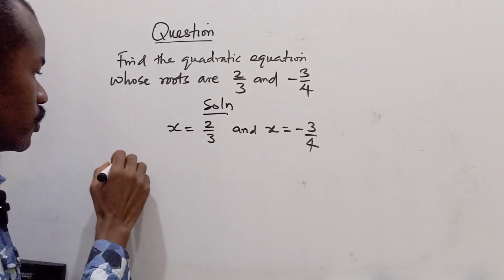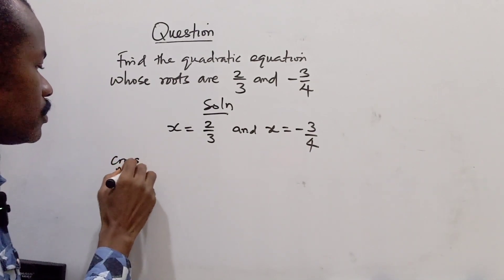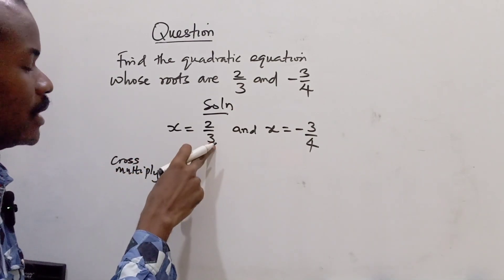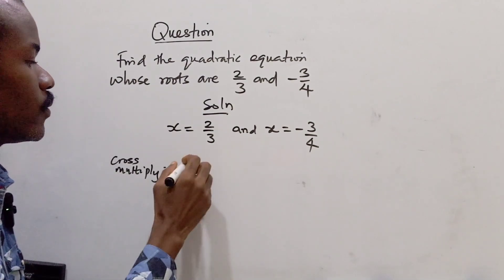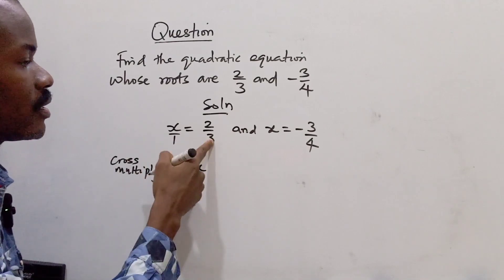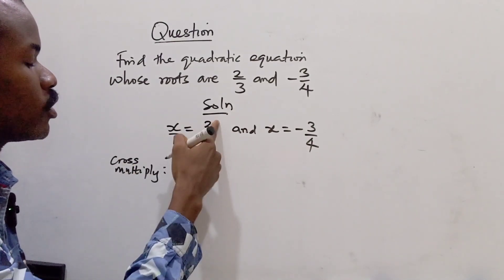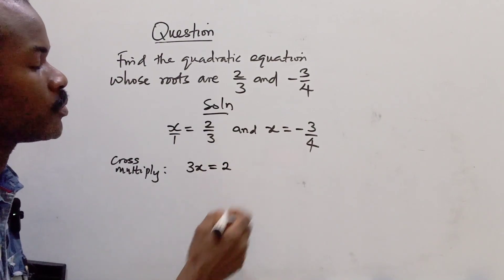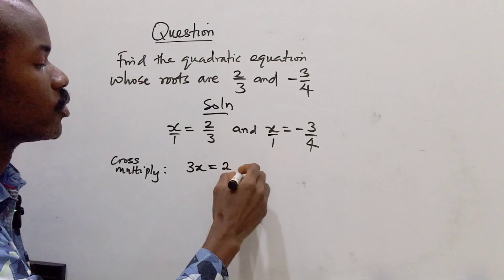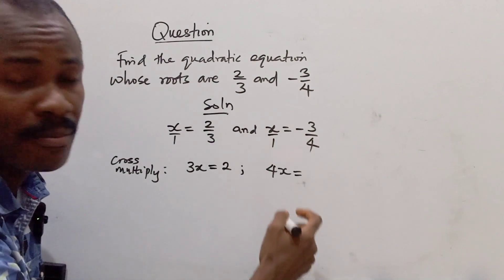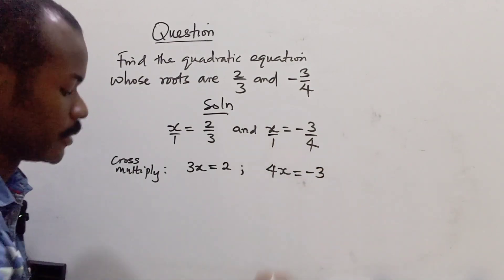What do I do at this point? I'm going to cross multiply. So this 3 will multiply this. We have 3x because this is over 1. 3 times this gives 3x, and 1 will multiply this, which is 2. Now for this part, we do the same. 4 times this is 4x, and 1 will multiply -3, which is also -3.